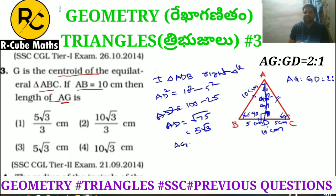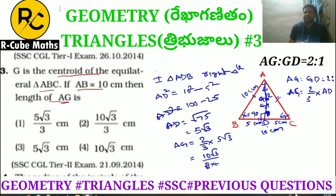AG equals 2/3 of AD. So AG equals 2/3 multiplied by 5 root 3, giving 10 root 3 divided by 3. This can also be written as 10 by root 3. In the options it is given as 10 root 3 by 3, which is the same answer.